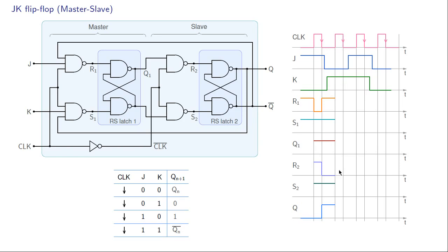In the next interval clock is high again. R2 and S2 are one, so Q cannot change. For R1: J is zero, so R1 is one. For S1: S1 is the NAND of K and Q. K is one and Q is one, so S1 equals zero. With R1 equal to one and S1 equal to zero, Q1 is reset to zero.